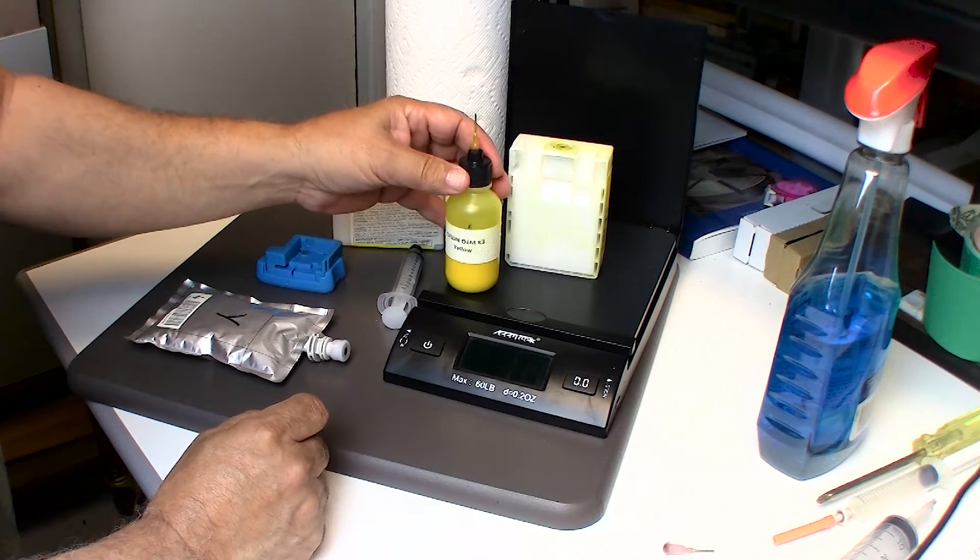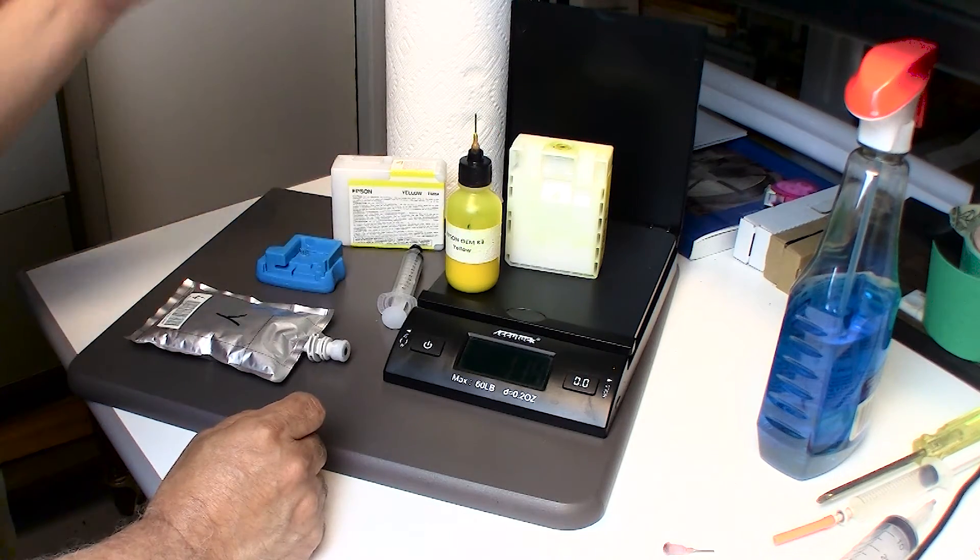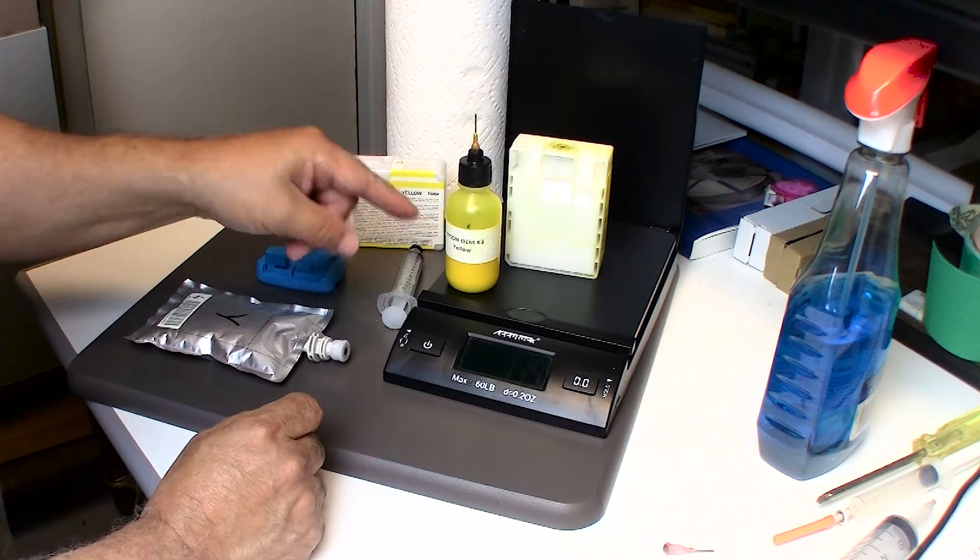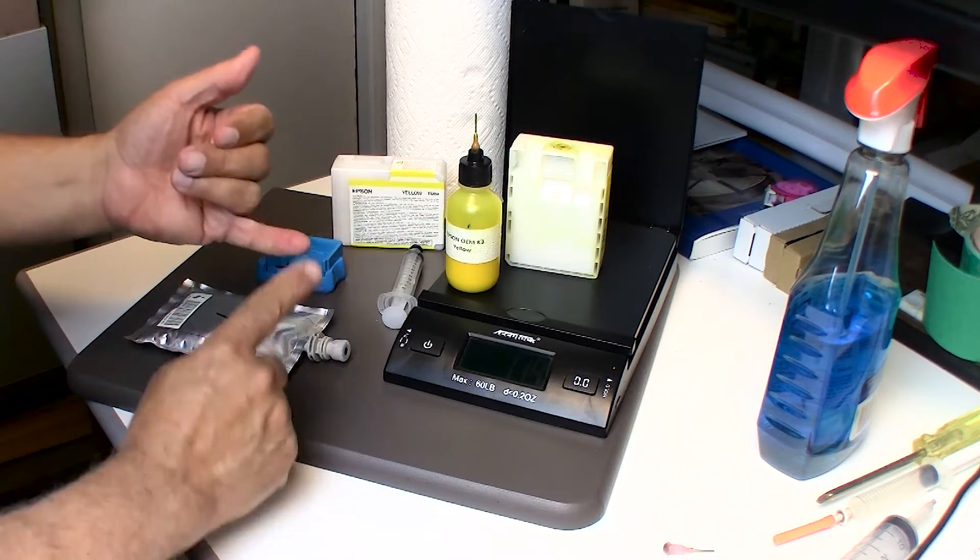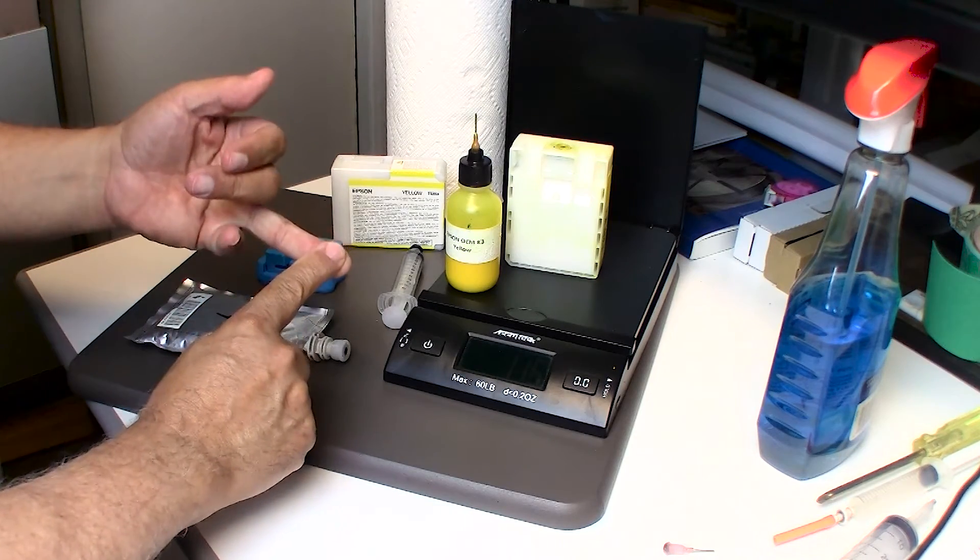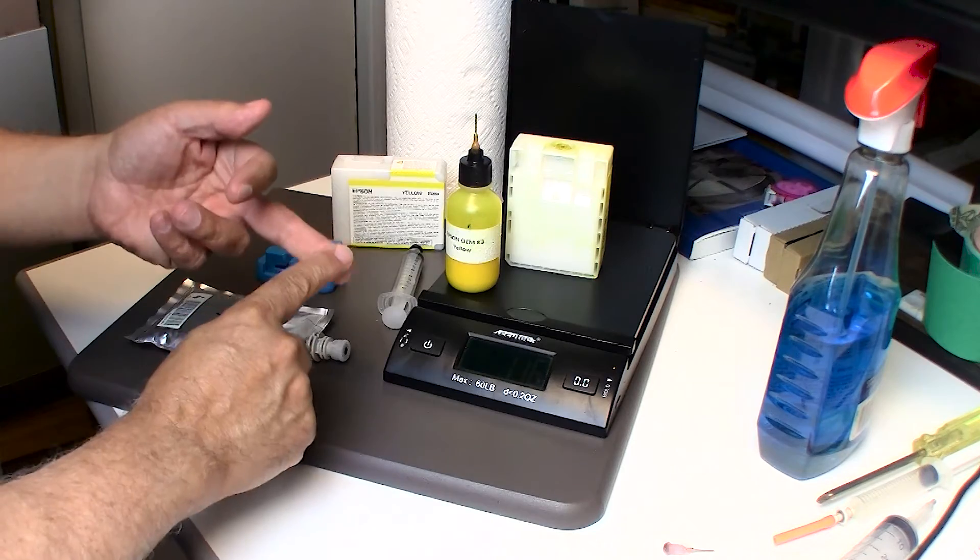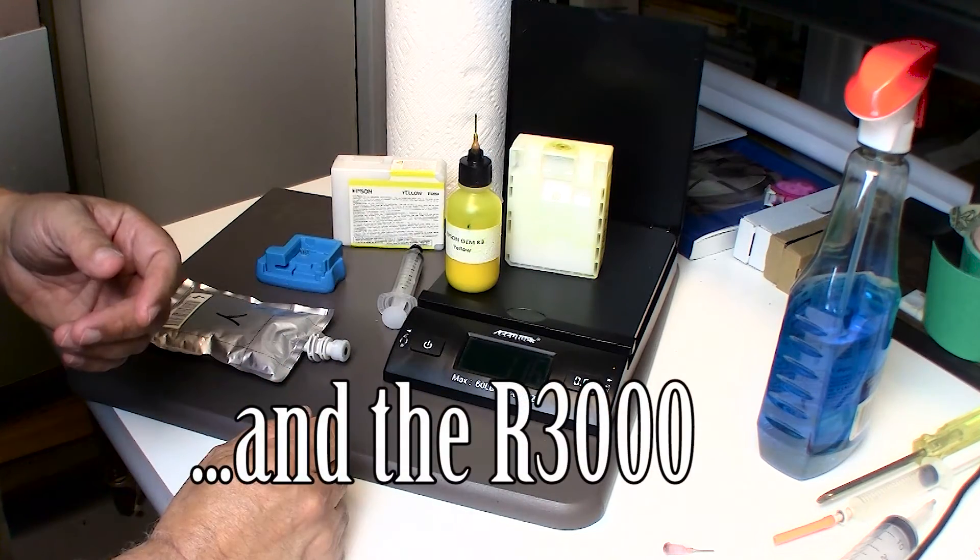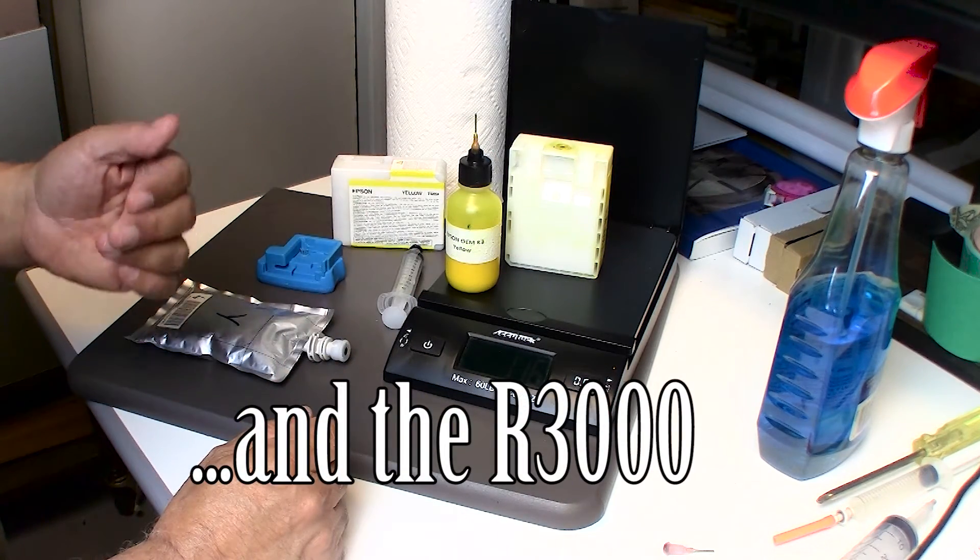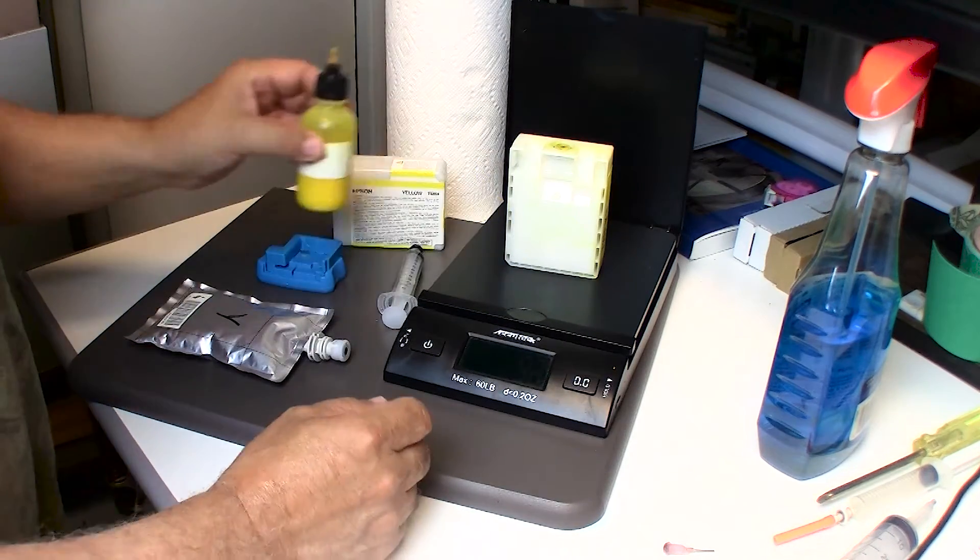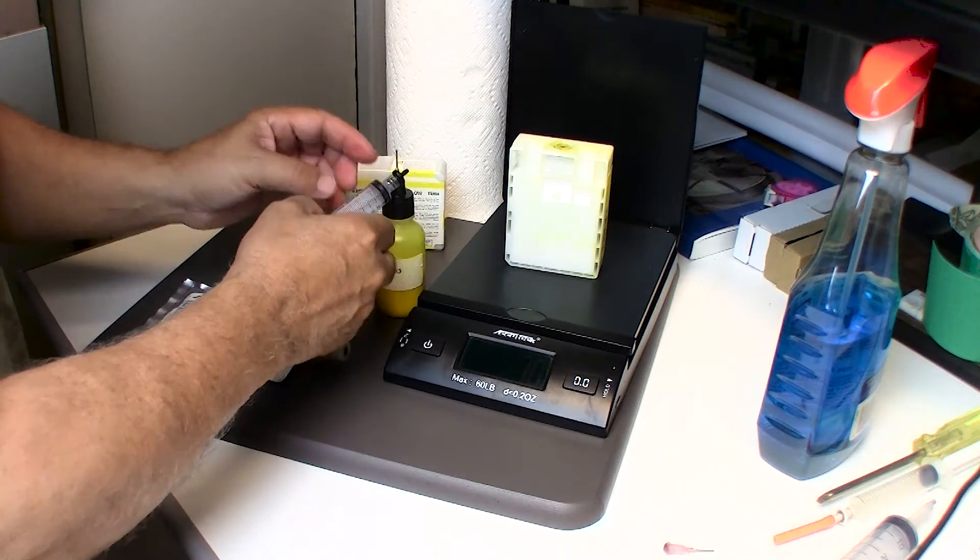As you can see here, I have little bottles. I have many of those. This one contains yellow K3 OEM, which is good for the 2400, the 2880, and both the 3800 and 3880, and any of the larger large format printers that utilize K3, even vivid magenta printers.